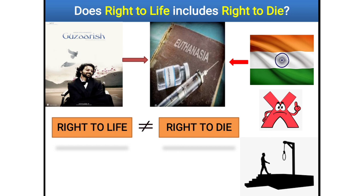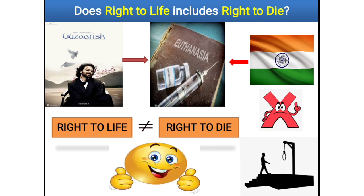So that was Article 21. To conclude: Article 21 is actually the heart of Part 3, Fundamental Rights of the Indian Constitution, and the Supreme Court has effectively expanded the role and purview of Article 21 on a case-to-case basis. I hope you've understood Article 21. Do let me know in the comments if you have any doubts. If you want the notes of Indian Constitution, join my Telegram group — the link is in the description below. Thank you everyone, bye-bye.